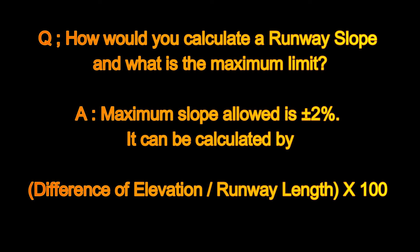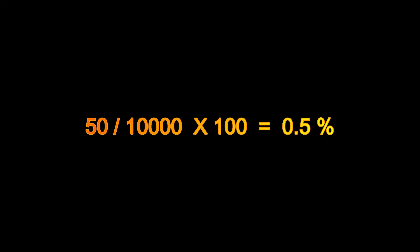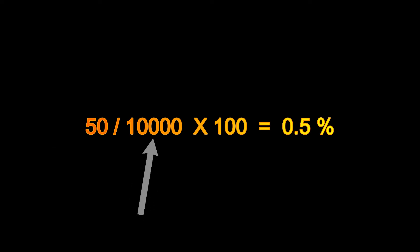How would you calculate runway slope and what is the maximum limit? The maximum runway slope allowed for takeoff and landing — for example for the 737 — is 2%. To calculate it, find the difference in runway threshold elevation of the two ends, then divide by the runway length and multiply by 100. For example, if the threshold elevation difference is 50 feet and the runway length is 10,000 feet: 50 divided by 10,000 multiplied by 100 gives 0.5%, so the runway slope is 0.5%.